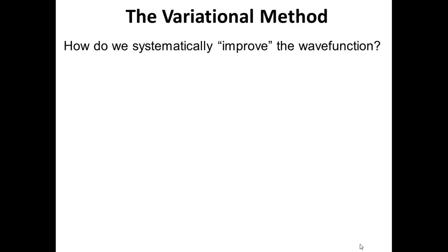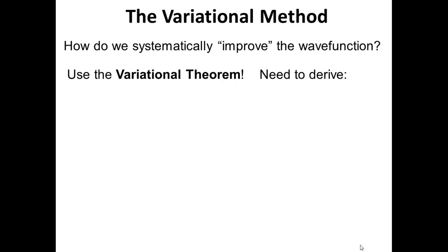So the question is: how do we systematically improve the wave function? We guess at the wave function, put a parameter in and improve it — but how do we actually do this in a systematic way? This is where the variational principle, or variational theorem, comes in. We need to derive this to see how it leads to a handy algorithm that is not too hard for students to execute with pencil and paper, but is also really computationally efficient for computers to do.